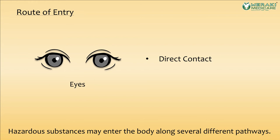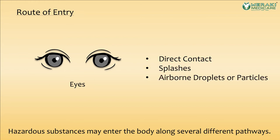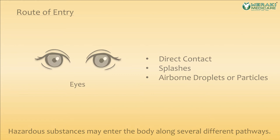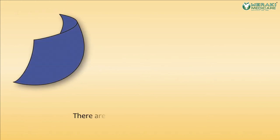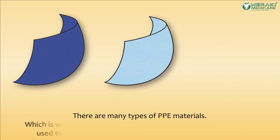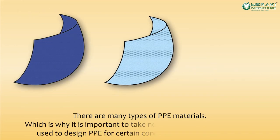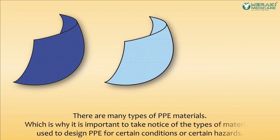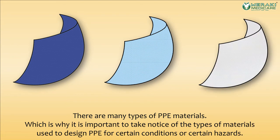Hazardous substances may also enter the body through the eyes via direct contact, splashes, airborne droplets, or particles. There are many types of PPE materials, which is why it is important to take notice of the type of material used to design PPE for certain conditions or certain hazards.